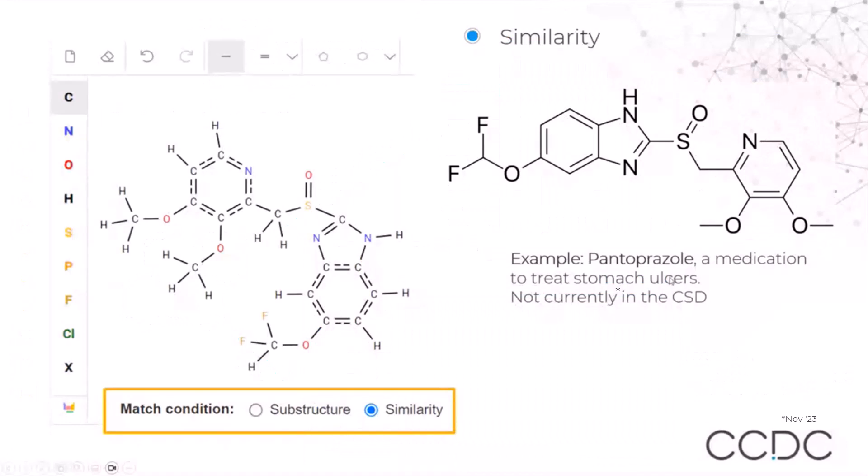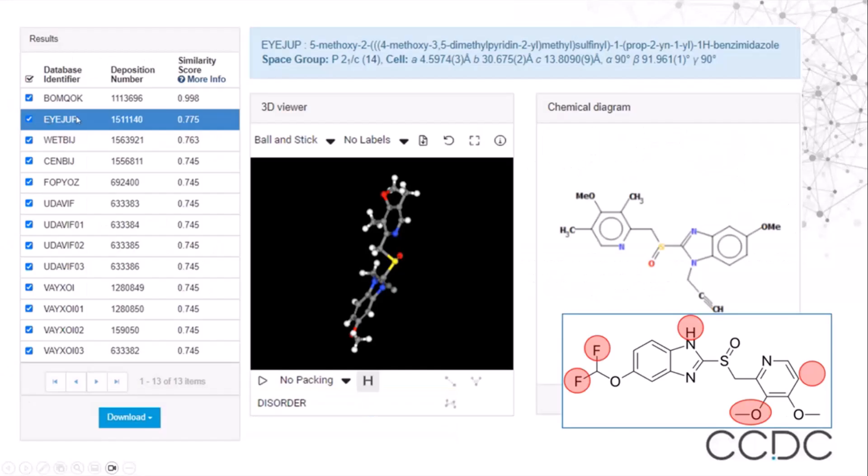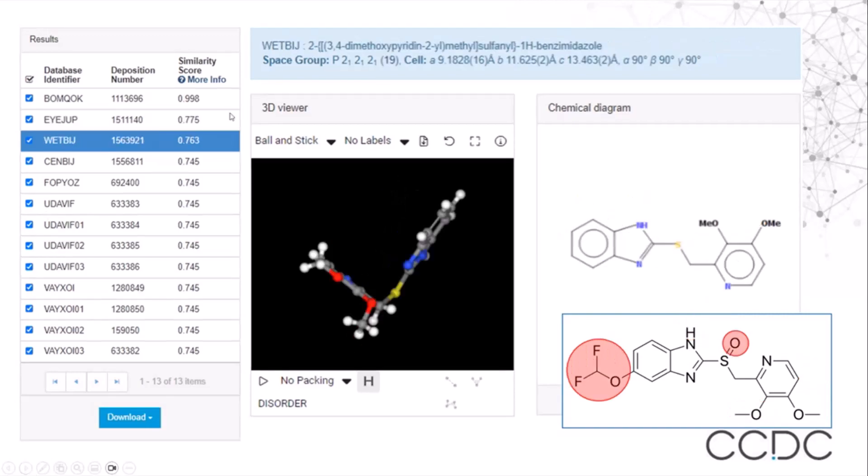To present the similarity search, as an example we have pantoprazole, a medication to treat stomach ulcers which is currently not in the CSD. So we have our structure in the sketcher, we run a similarity search, and as a result we can see the list of records, and in a third column we have the similarity score. We can scroll through and see different examples with different scores.